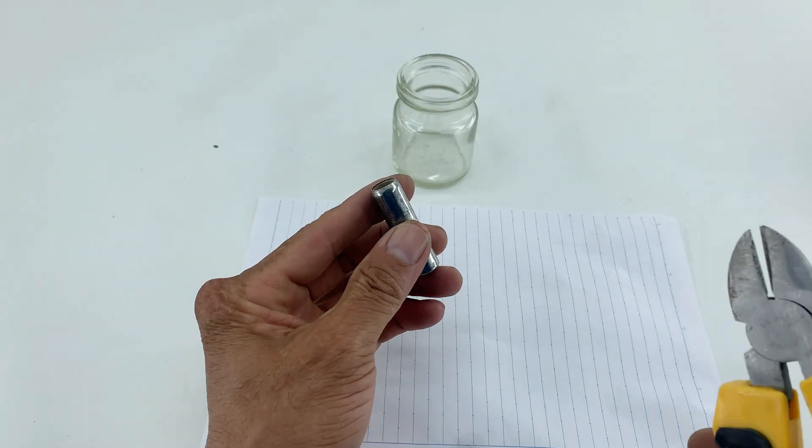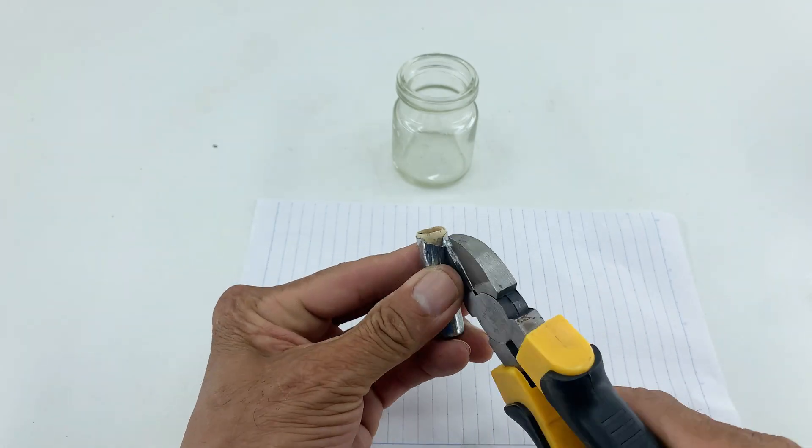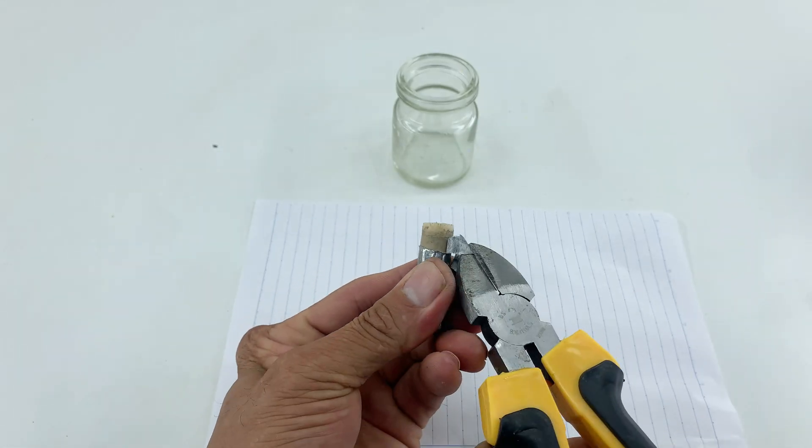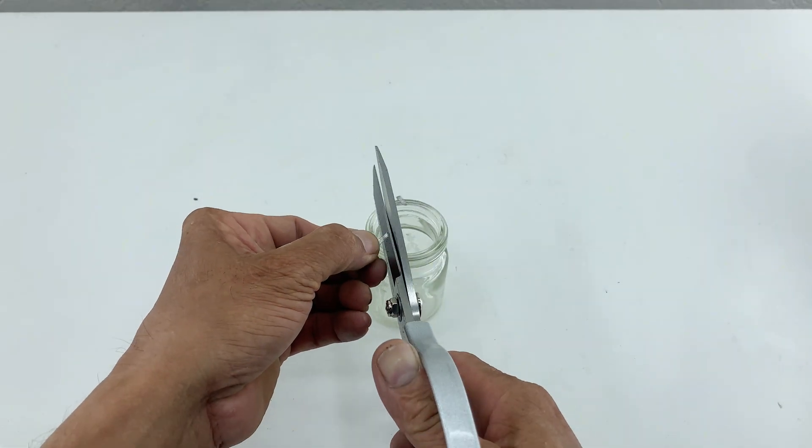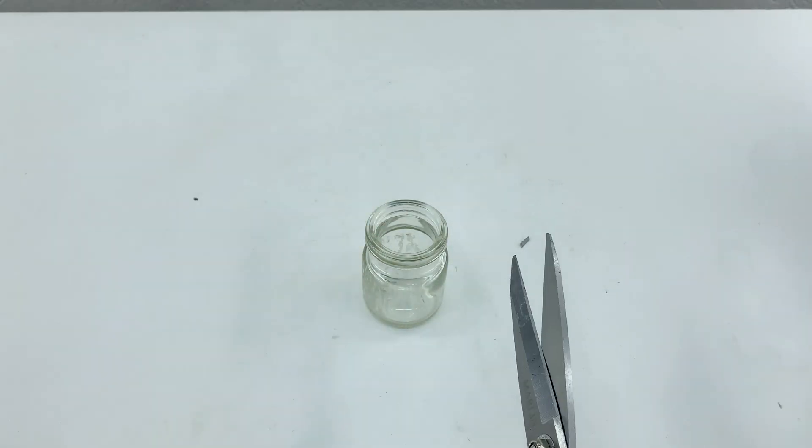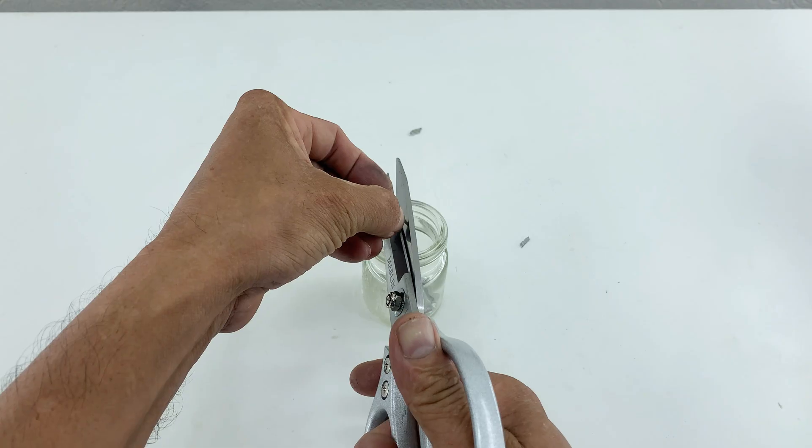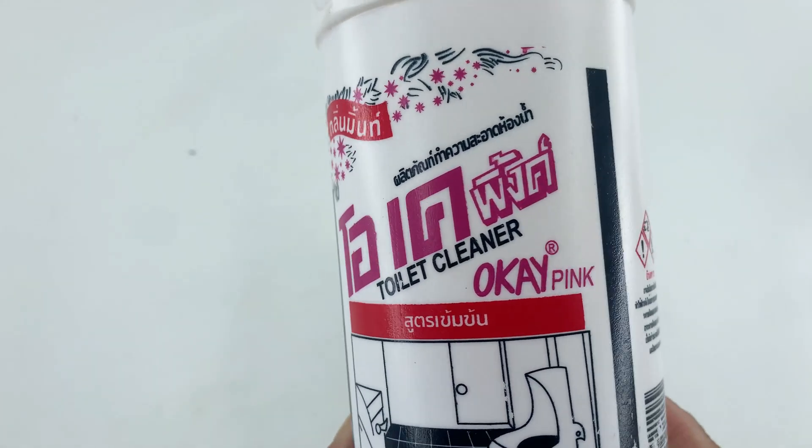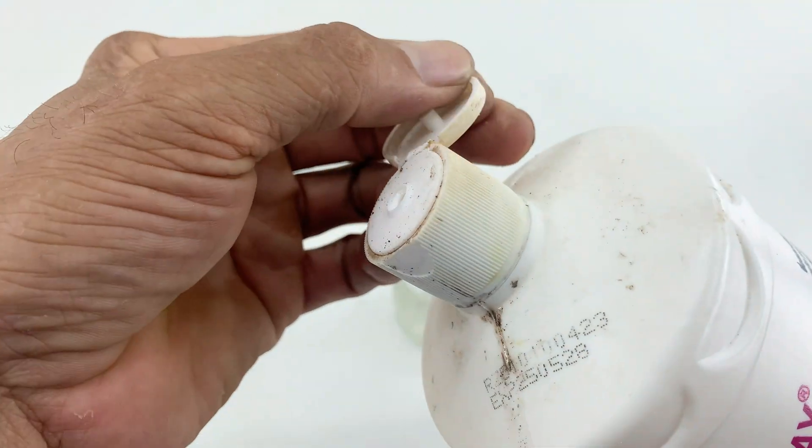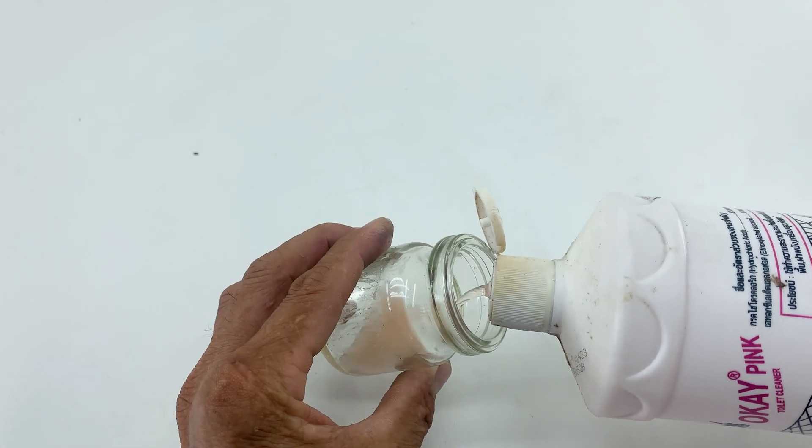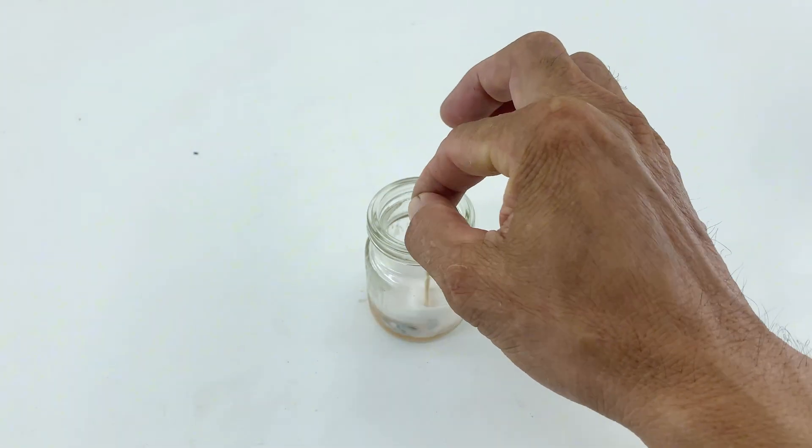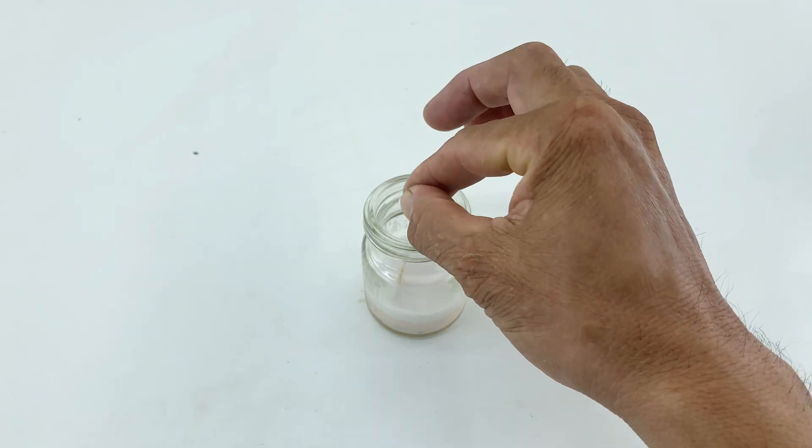For a homemade flux, I'm taking small pieces of metal cut from battery and putting them into a small glass jar. Then, I pour in some toilet cleaner and stir it all together with a toothpick. This creates a surprisingly effective homemade flux that helps in the soldering process.